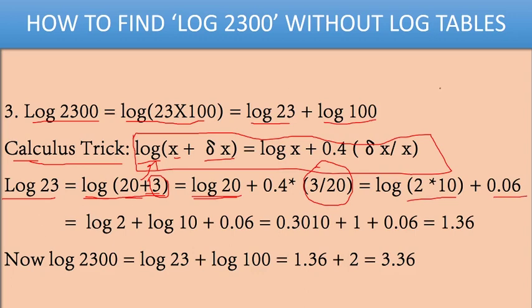The multiplication factor becomes the addition factor. So log(2 × 10) can be written as log 2 + log 10. Log 2 is 0.3010, log 10 is 1, plus 0.06. When you add these: 0.3010 + 1 + 0.06 equals 1.36. This is the value for log 23.